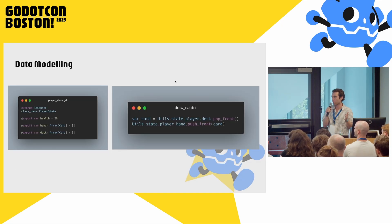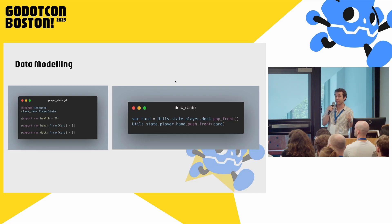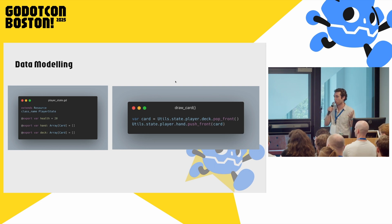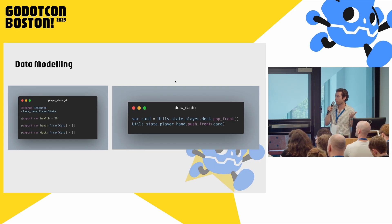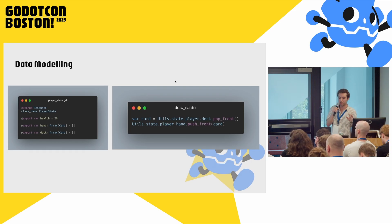To break this down in the same pattern: we have our player state, which is a custom resource. The player has health — maybe it starts at 20. The player has a hand, which is really just an array of cards. The player has a deck that's also just an array of cards. And if you're following this talk, you shouldn't be surprised to hear cards are also a custom resource — it's custom resources all the way down. These are just very simple Godot objects. If you want to draw a card, that's as simple as popping from your deck and pushing into your hand. These state transitions are really straightforward.